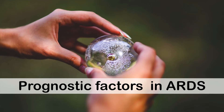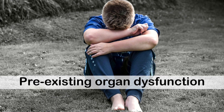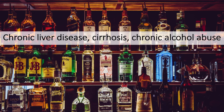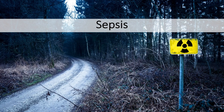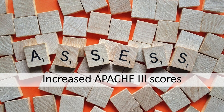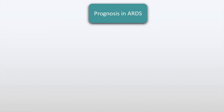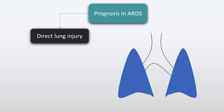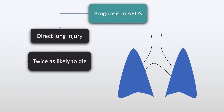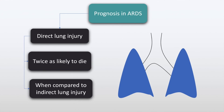The prognostic factors in Acute Respiratory Distress Syndrome include advanced age, pre-existing organ dysfunction, chronic liver disease, cirrhosis or chronic alcohol abuse, immunosuppression, sepsis, and increased APACHE 3 scores. The prognostic factors in ARDS are also related to direct lung injury — such patients are twice as likely to die when compared to patients with indirect lung injury.